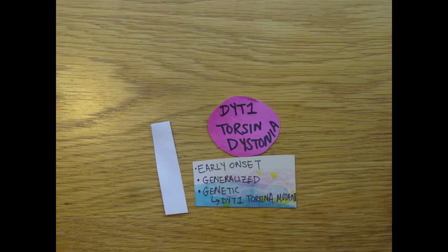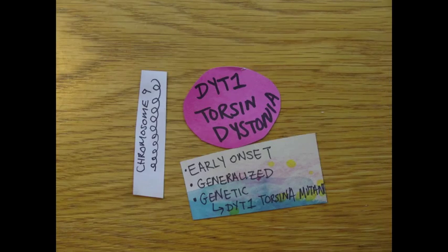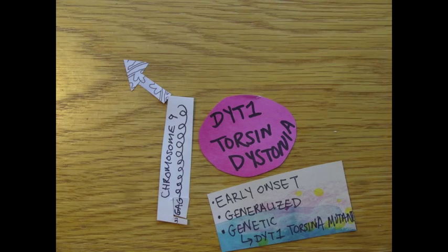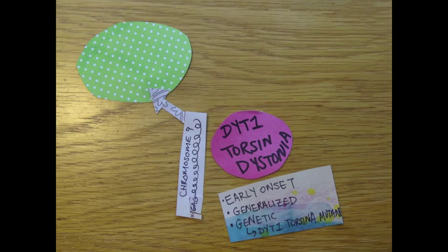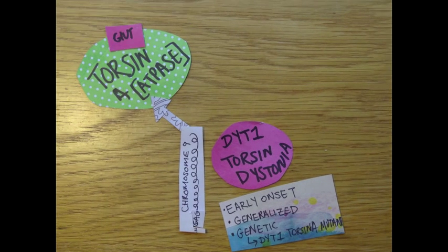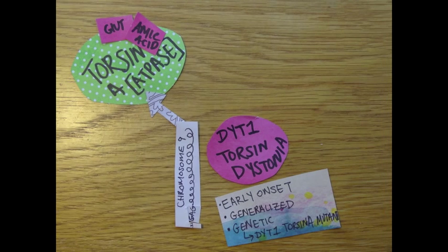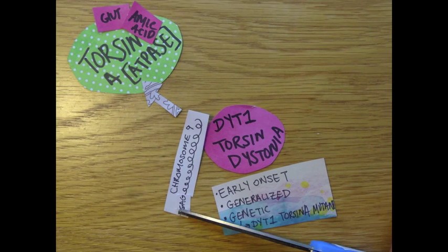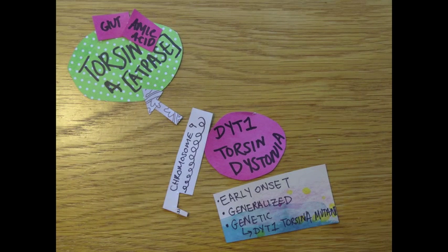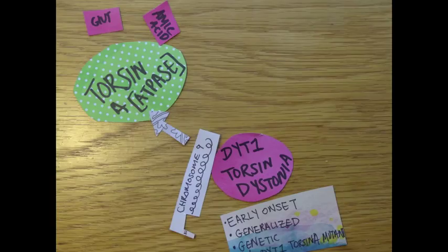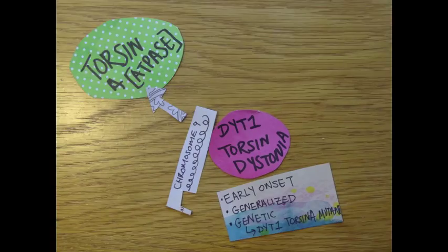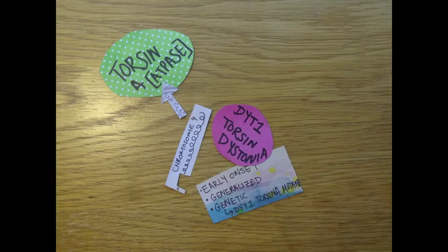In those affected, an abnormality is present on chromosome 9 where the gene for the torsinA protein is mutated by a three base pair GAG deletion. This deletion removes a glutamic acid from the C-terminus of the torsinA protein, and this deletion is responsible for the complete manifestation of the DYT1 movement disorder.